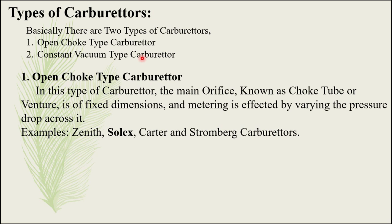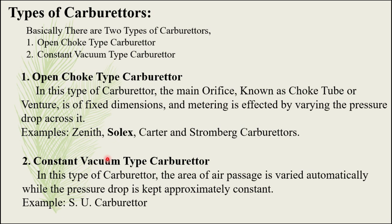In the open choke type carburetor, the main orifice known as the choke tube or venturi is of fixed dimensions. Fuel metering is affected by varying the pressure drop across it. Various examples of this category include Zenith carburetor, Solex carburetor, Carter carburetor, and Stromberg carburetors. In this video we will have a detailed discussion regarding the Solex carburetor.